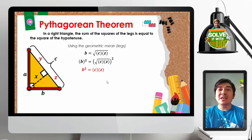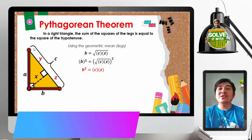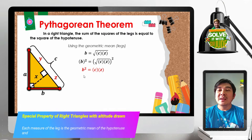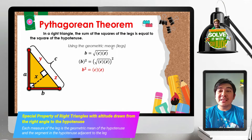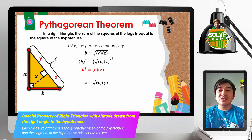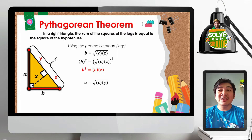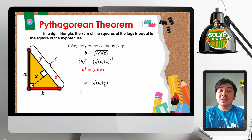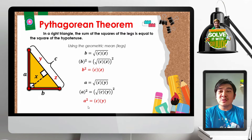Next, let us proceed with the other leg, A. Applying the same process, A equals the square root of the hypotenuse times the segment adjacent to A. The segment closer to A is Y, so we include Y. Squaring both sides of the equation results in A squared is equal to C times Y, or CY.